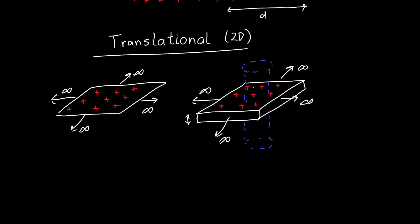Alternatively, any Gaussian surface that has the same area on top as on the bottom will work — a cube or rectangular prism, for example. In these cases the shape of the Gaussian surface won't really matter.